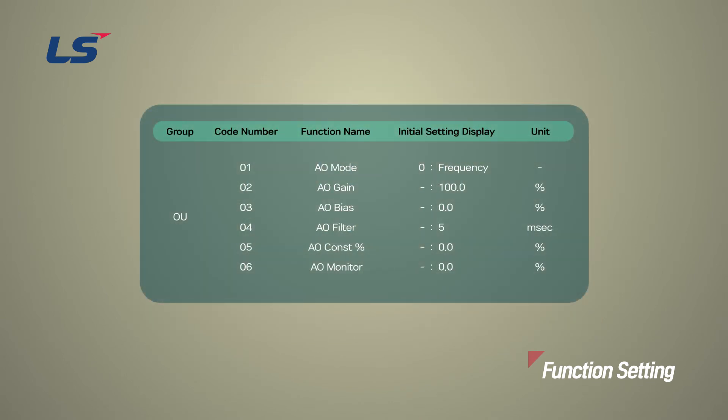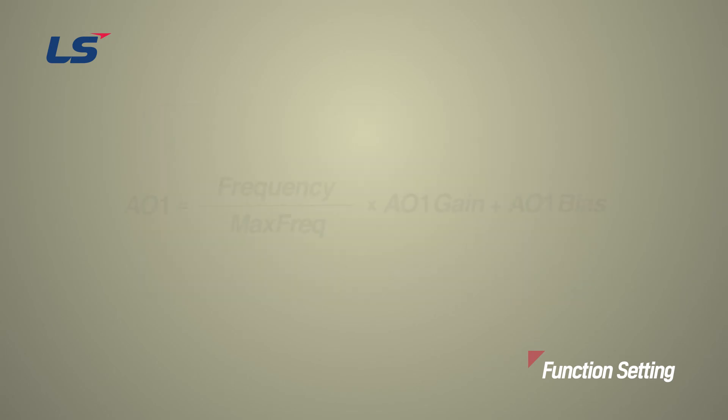In OU group 2, you can set the gain value for analog output. And in OU group 3, you can set the bias value for analog output. Gain and bias are reflected in the output as the formulas shown on the screen.